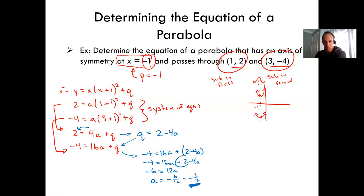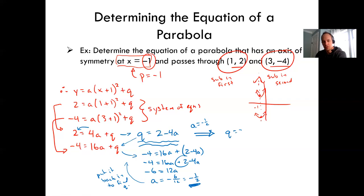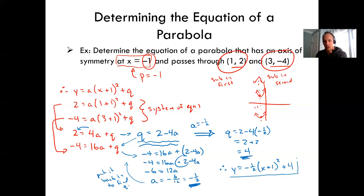Now that I have a, finding q is easy. Use q equals 2 minus 4a. With a equal to negative one-half: q equals 2 minus 4 times negative one-half, which is 2 plus 2, so q equals 4. Therefore the equation is y equals negative one-half(x plus 1) squared plus 4.